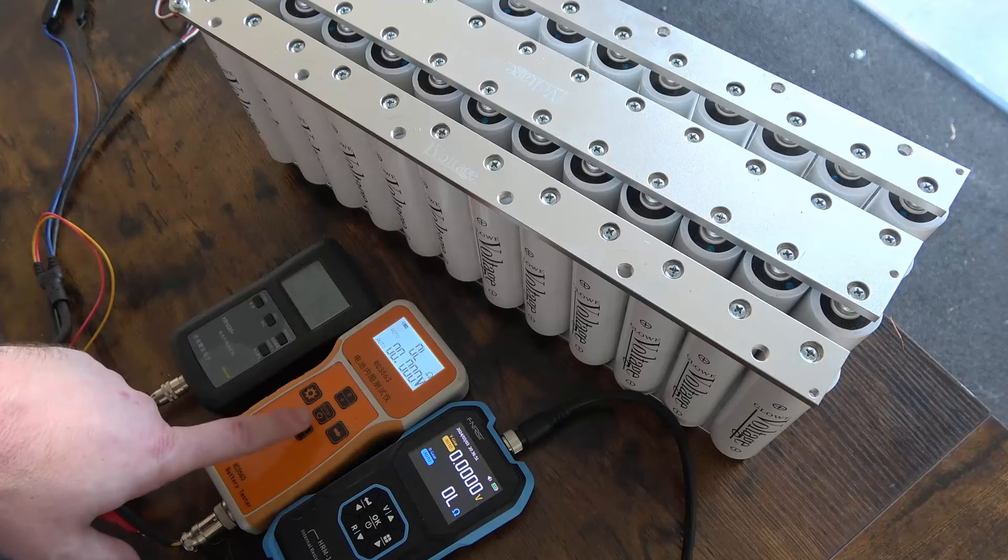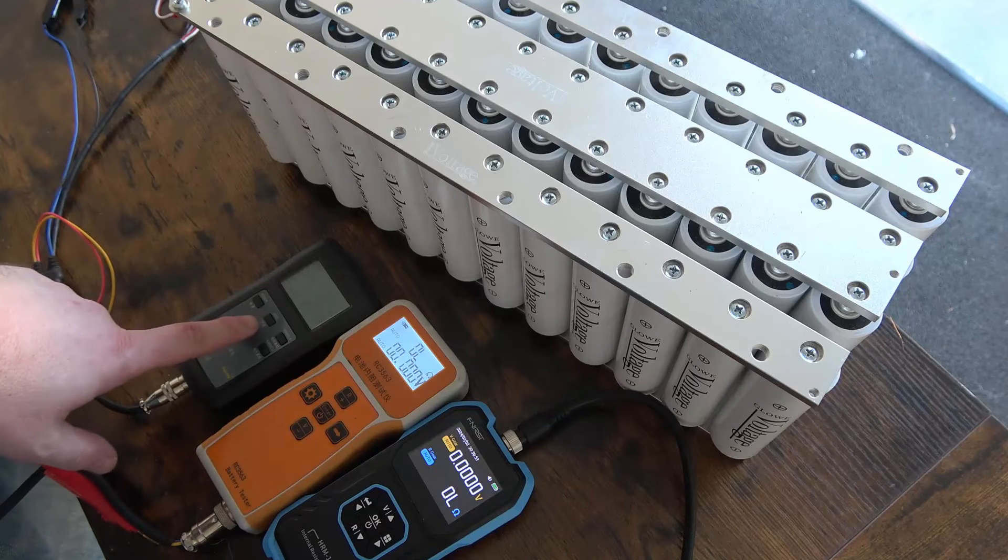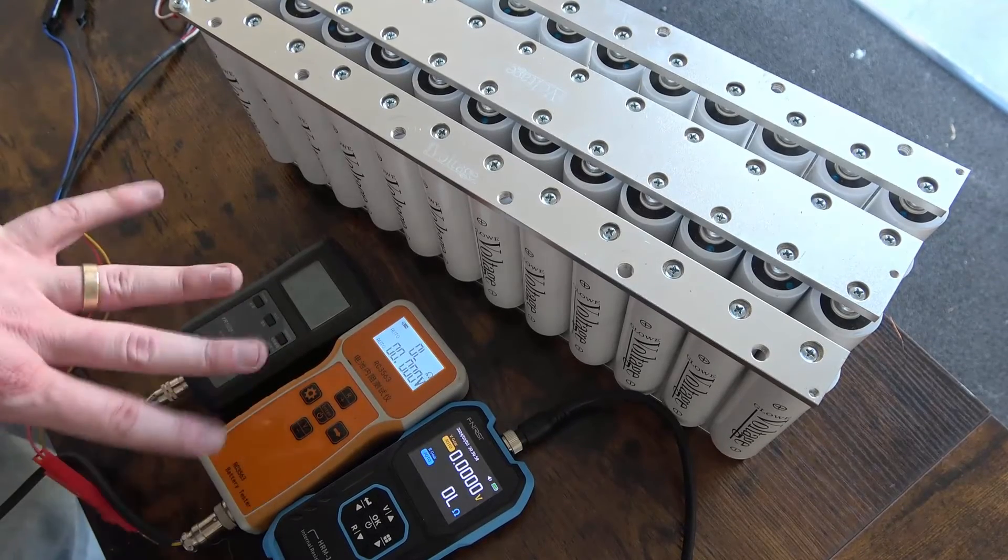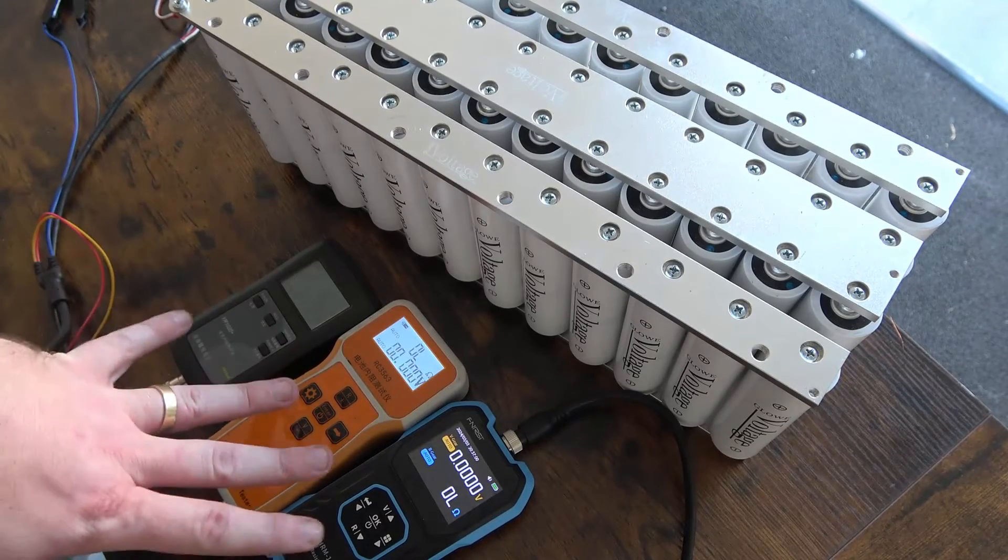This is the HRM10, this is the RC3563, and this is the YR1035+. If you search for any of those on AliExpress they're going to come right up. You can also find them on Amazon but they're going to cost you quite a bit more.